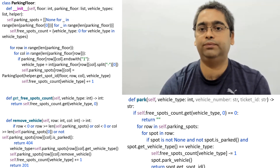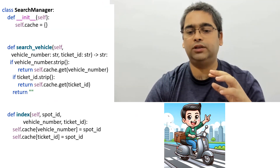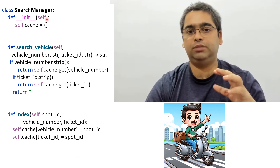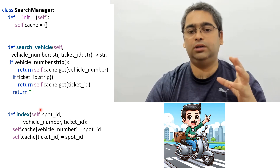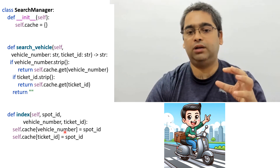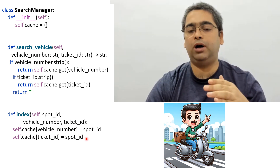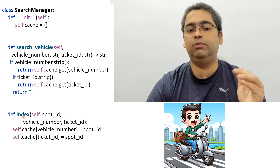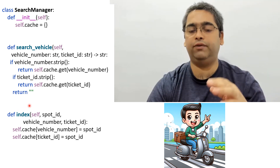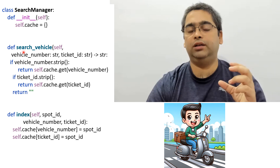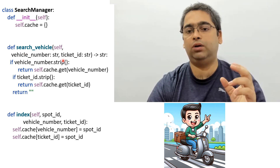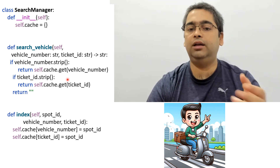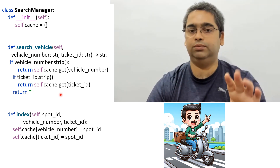The ParkingFloor class is used by the solution class, which keeps a list of parking floors and calls this class's methods. For the search functionality, we have the SearchManager class, which stores parking details — vehicle number, ticket ID, and where the vehicle was parked — inside a dictionary. When someone wants to search by vehicle number or ticket ID, it looks up the dictionary and returns the result, or an empty string if not found.